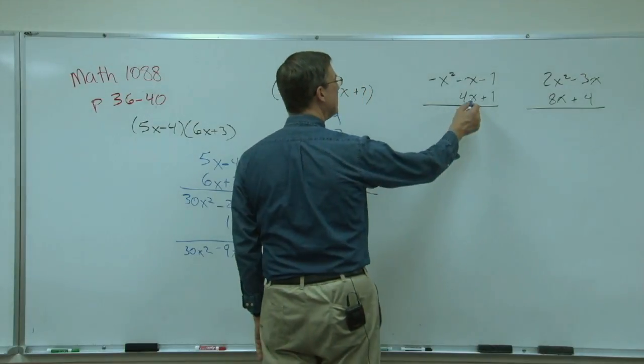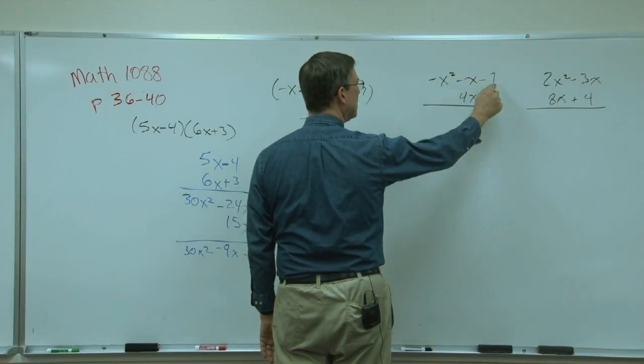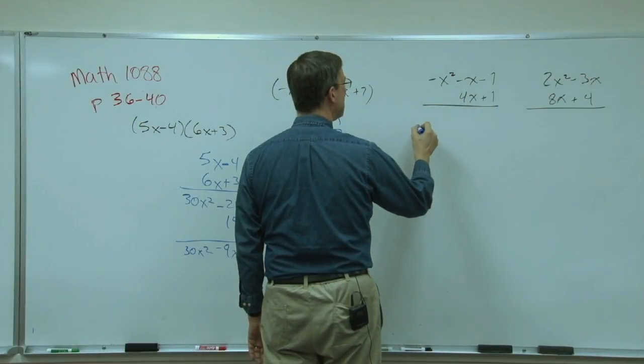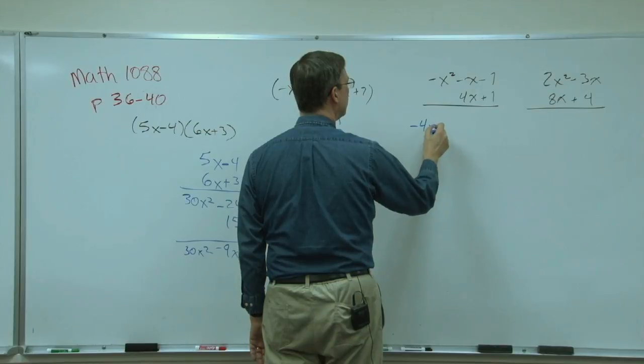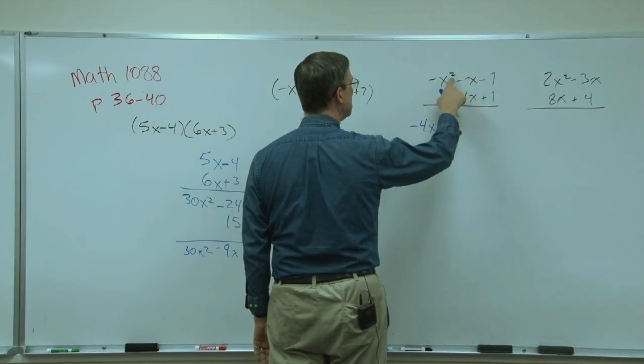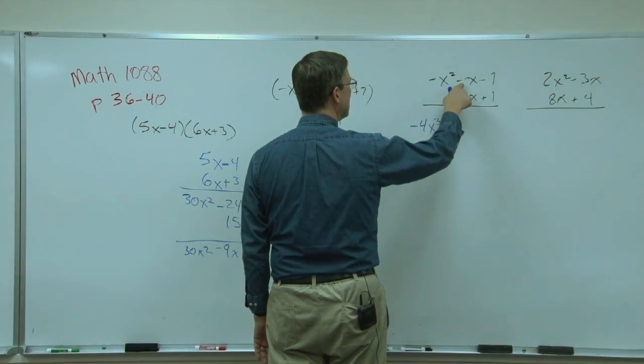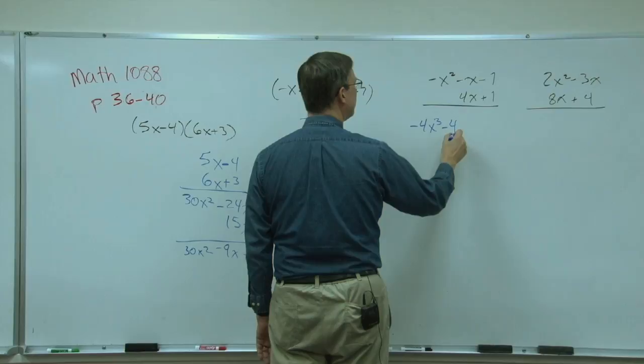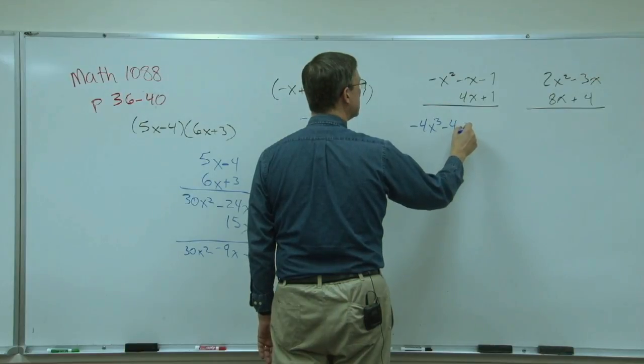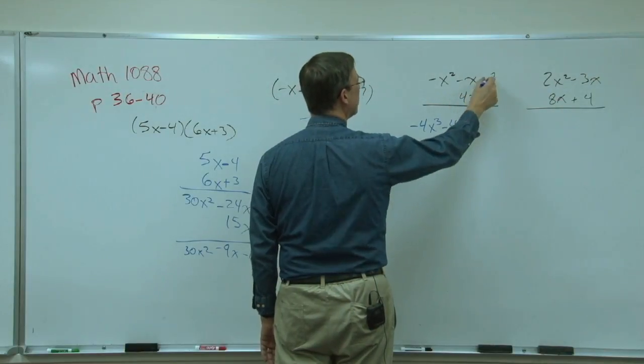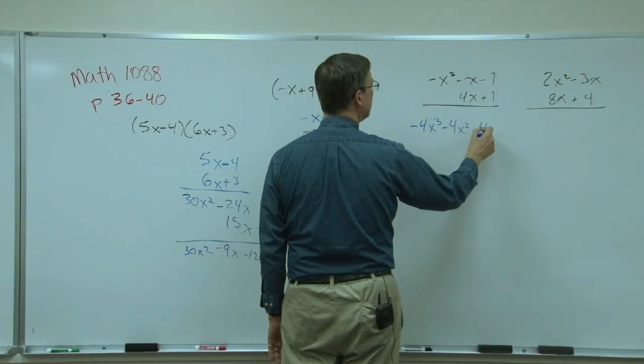So we're going to take the 4x and multiply it times all three of them. So 4x times negative x would be negative 4x to the, add the exponents, 2 plus the invisible 1, 3. 4x times negative x would be negative 4x squared. And then 4x times negative 1, negative 4x.